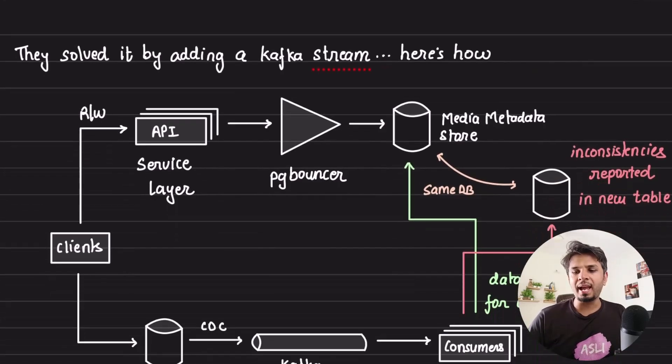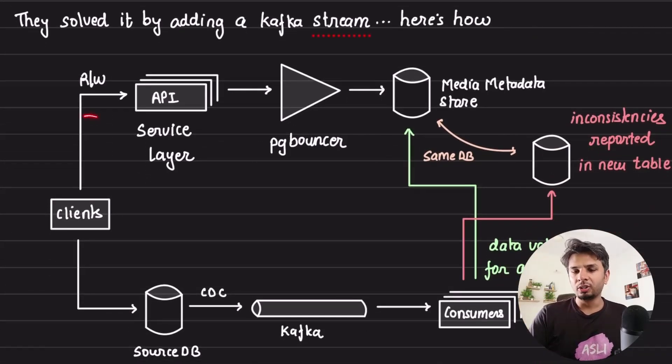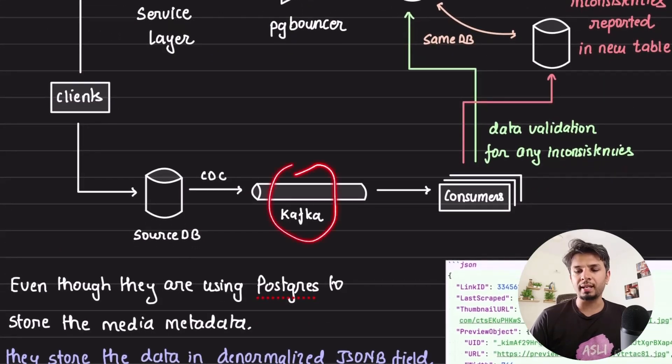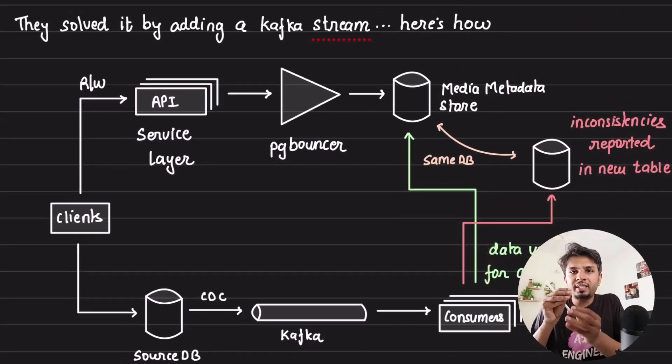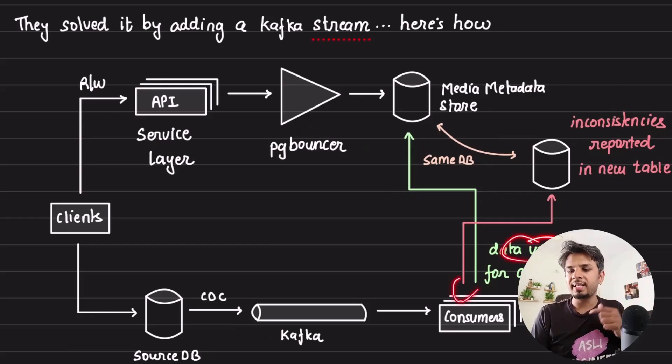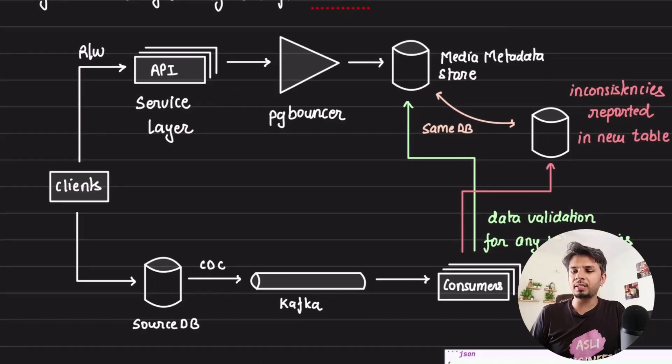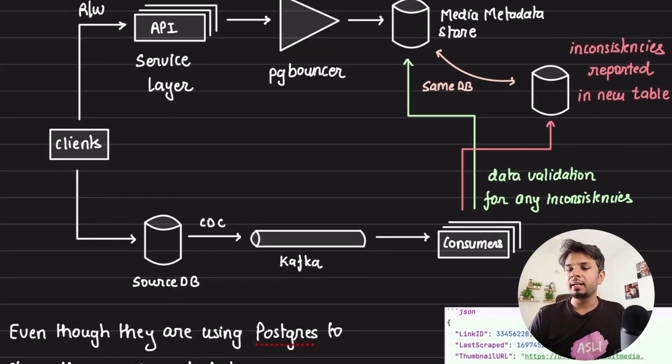They solved this problem by adding a Kafka stream in between. The clients were doing dual writes. They established a CDC and ingested all those events in Kafka. The consumers picked up those events and before writing, they did this check. All the validation for any inconsistencies is being checked before it is ingested. This way, your backfill is a very simple process, and these consumers they wrote take care of ensuring or checking for any inconsistencies.